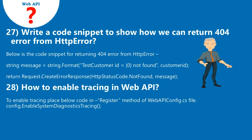Question 27: Write a code snippet to show how we can return a 404 error from HttpError. Below is the code snippet for returning a 404 error from HttpError: string message = string.Format("TestCustomerID {0} not found", customerId); return Request.CreateErrorResponse(HttpStatusCode.NotFound, message).